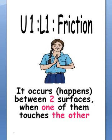An example: take your two hands together and rub them. Between them is friction. Friction occurs or happens between two surfaces when one of them touches the other.